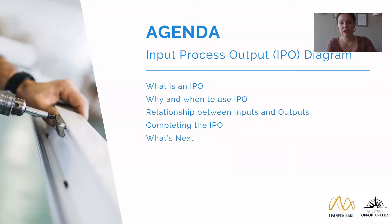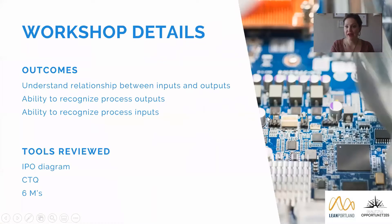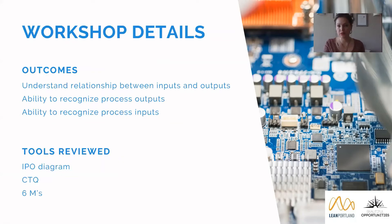Today we're going to talk about the input process output diagram. We'll start off talking about what is an IPO, when and why to use an IPO, the relationship between the outputs and the inputs, and completing the IPO before discussing what you can do once you have it. My focus is to make sure you can understand that relationship between the inputs and the outputs, recognize process outputs and process inputs, and learn about related tools: the IPO, the CTQ, and the 6Ms.